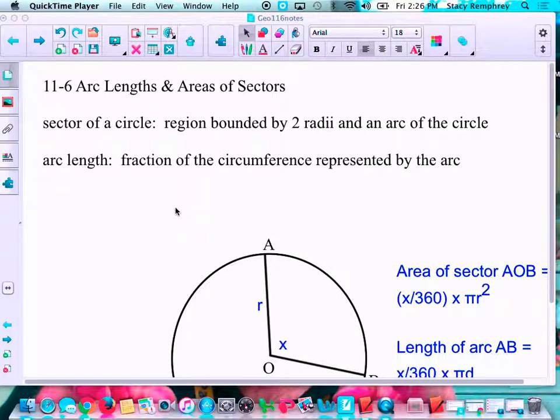Okay, these are the 11-6 notes. We're going to be using the formulas for area of a circle and the circumference, but instead of talking about the whole circle, we're going to be talking about sections. So as you can see here in the definitions, the sector of a circle is a region bounded by two radii and an arc of the circle.